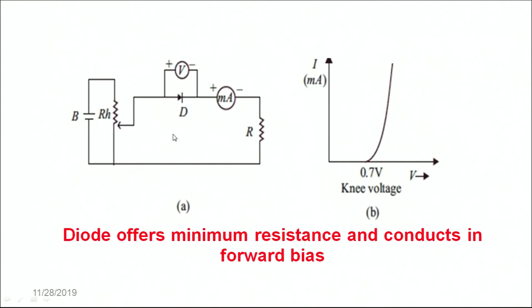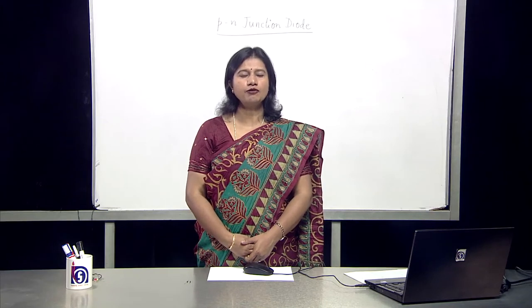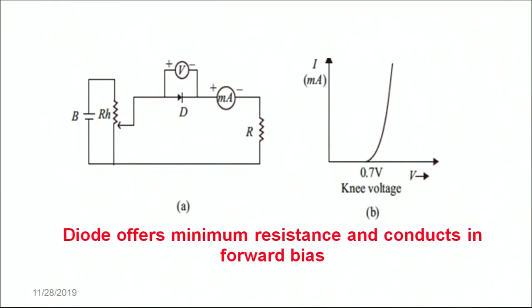Let's understand the working of the diode in forward bias. In forward bias the diode offers minimum resistance and therefore as soon as the knee voltage is attained the diode shows a sharp increase as the voltage is increased. Once the knee voltage is attained, the diode increases the current as the voltage increases.